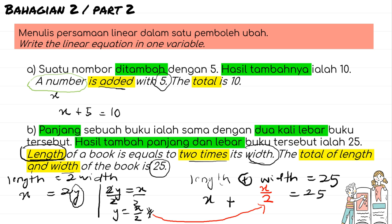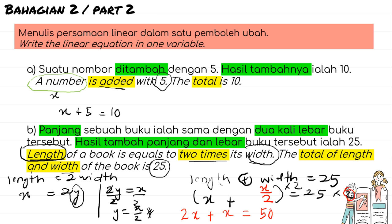That is the linear equation for the second example. Compared to the first one, it is quite a bit harder, but both follow the same principle of writing the situation as a linear equation in one variable.